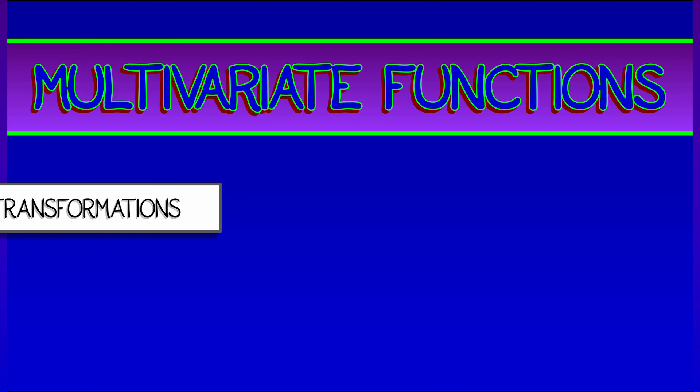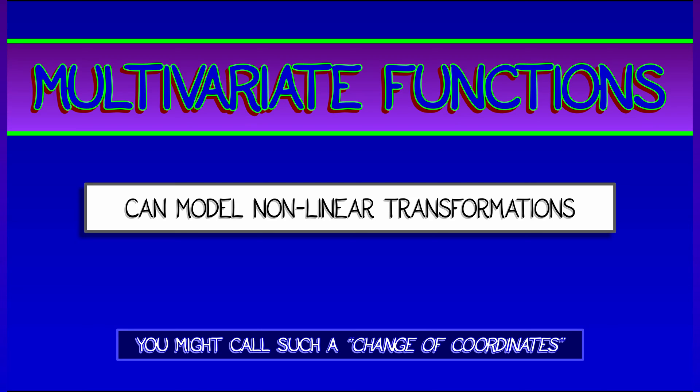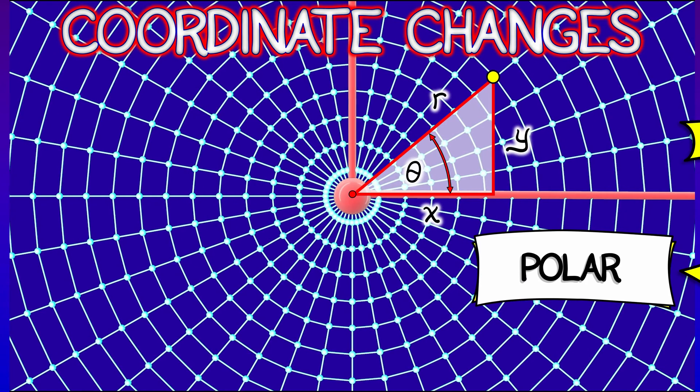One of the things we can do with multivariate functions is model nonlinear transformations. In the same way that we used matrices to model linear transformations, linear changes of coordinates, we can do nonlinear changes of coordinates.